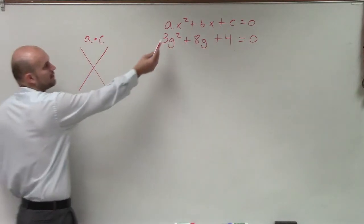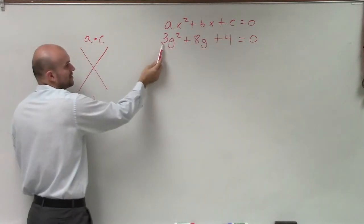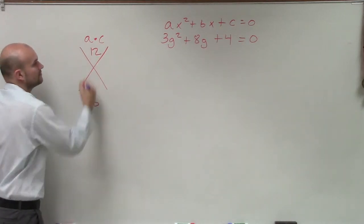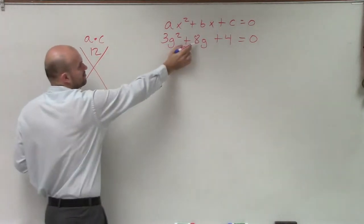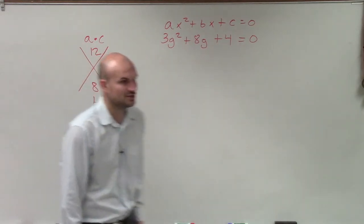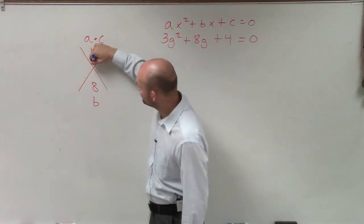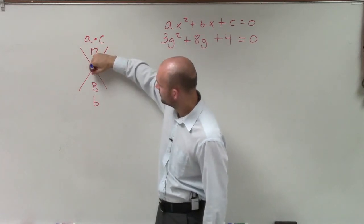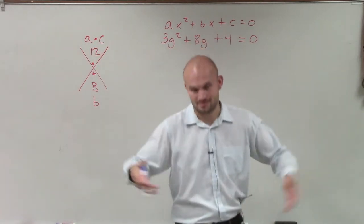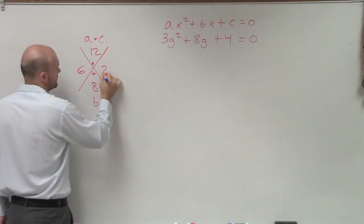When I do a times c, I want you to multiply a times c, which in this case will be 3 times 4. Well, 3 times 4 is 12. And then our b is our middle term, which is 8. So now what I need to do is determine what two values multiply to give me 12 but add to give me 8 — and that is 6 and 2.